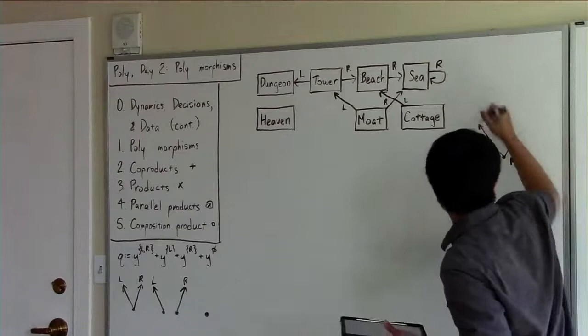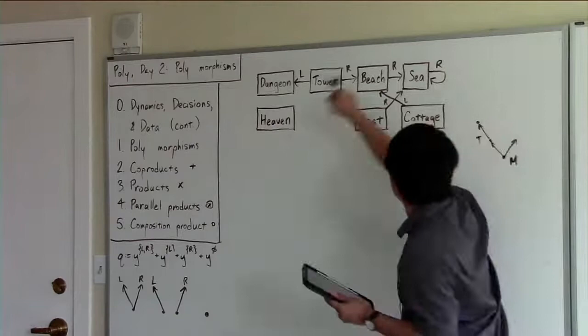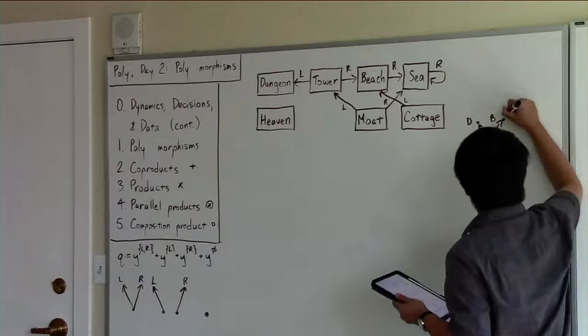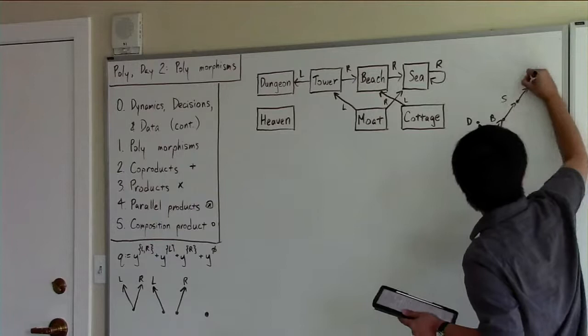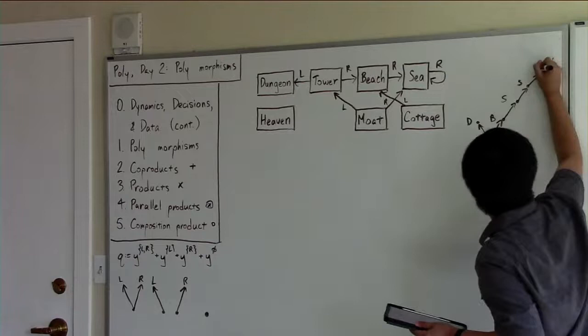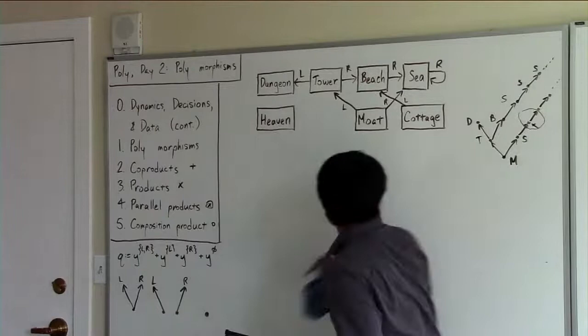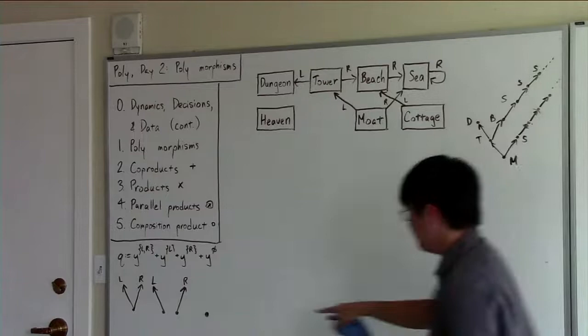From the tower, we can go left or right. Going left takes us to the dungeon, from which we can't go any further, or to the beach, from which we can go right again to the sea. And then from there, we can just keep going right - it just keeps going with a bunch of S's. Alternatively, if we went right from the moat, we would also end up at the sea, and then it would just be this long ray of rights. So now we have this instance of this binary tree. These trees are built up from a bunch of copies of these smaller corollas stacked on top of each other.